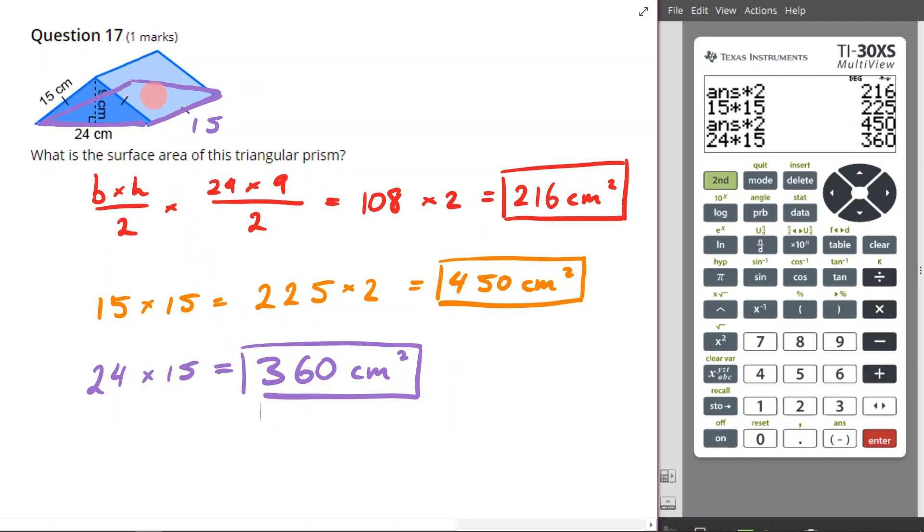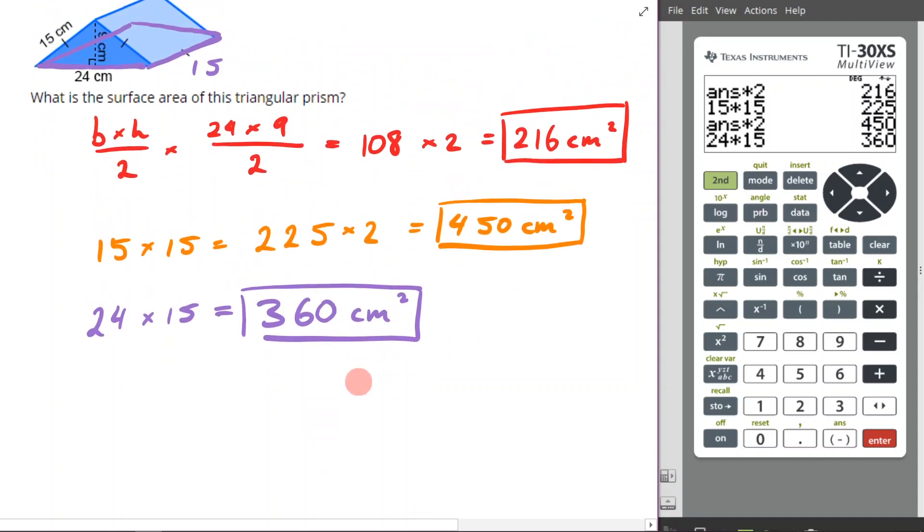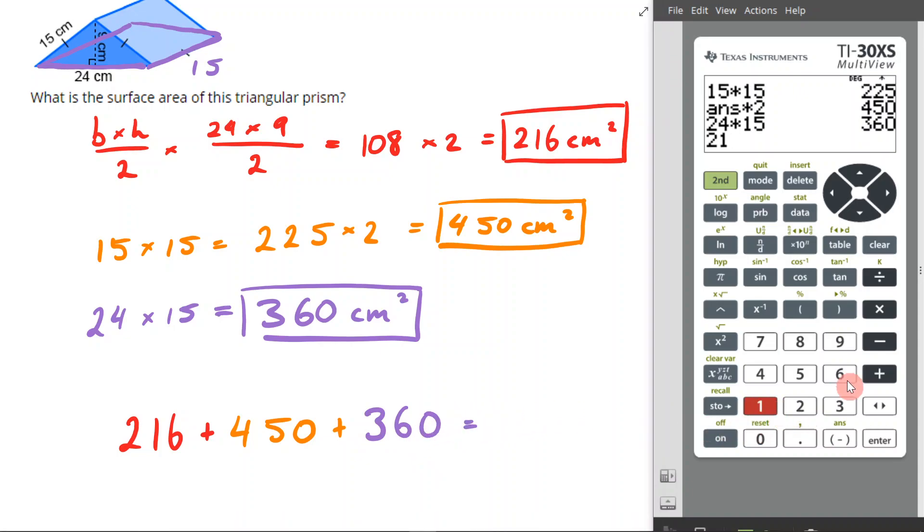We're not done yet, but we have now found all the areas of the relevant faces, but now we actually have to add them together. So let's do that. Now I'm going to go 216 plus 450 plus 360. So I'm adding them all together because I want the total surface area. So I have to add all the surface areas together. That makes sense. Just come to my calculator. 216 plus 450 plus 360 is 1026.